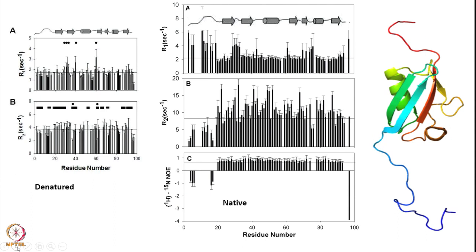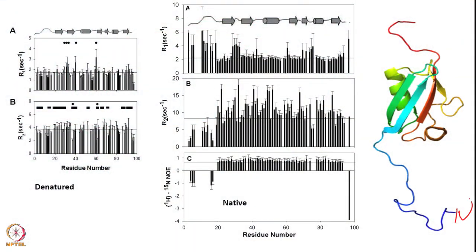Now summarizing R1, R2, and NOE together for the same protein SUMO-1 (small ubiquitin-related modifier 1): for the flexible portions — N- and C-termini — we have high R1, low R2, and negative NOE. For the structured portions — beta sheets and alpha helices — we have low R1, high R2, and positive NOE. For loops, there is flexibility, so relatively higher R1, but because of exchange contribution some R2 values are still high, and there are positive NOE values.